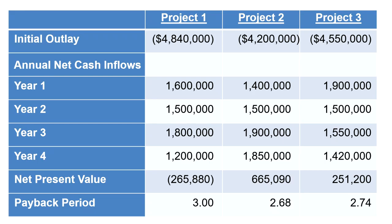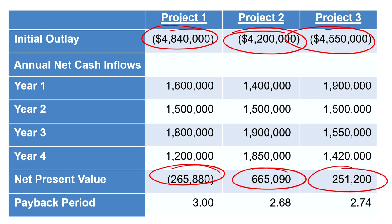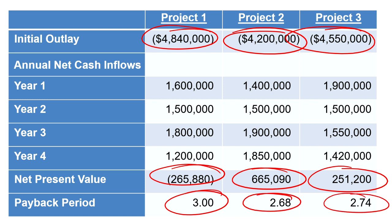We have a table here with three projects, each with an outlay of four million and something. Now, we've got eight million dollars — we were told that in the question. We can only do one of these projects right now because any two of them added together is going to be more than eight million dollars. We're given all the individual years' cash flows, and they tell us the net present value and the payback period for each of these potential projects.